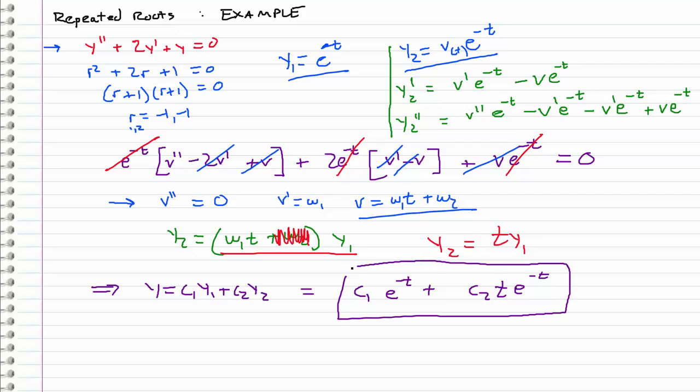And we see that again, we arrive at a solution where all we have to do is take our first solution y1 and multiply it by a t. So really, it's not really necessary to go through all these different steps.